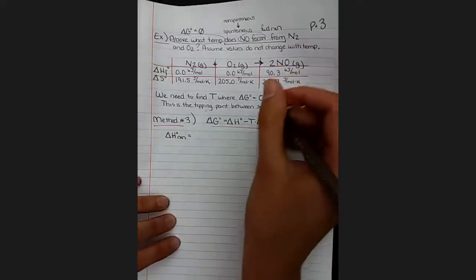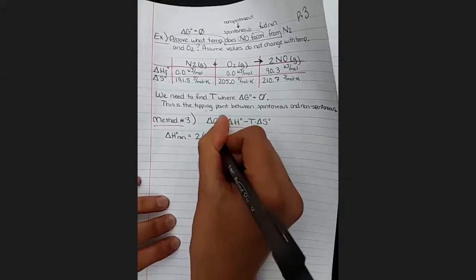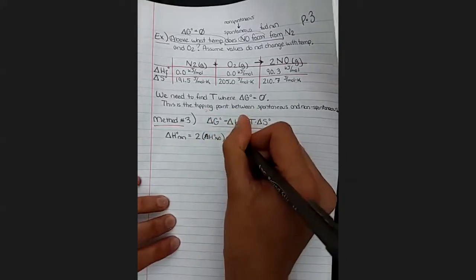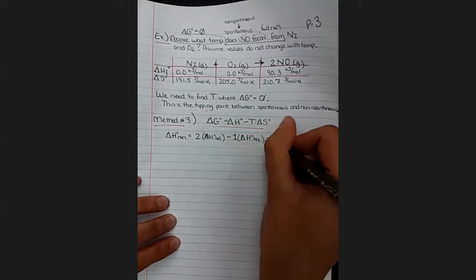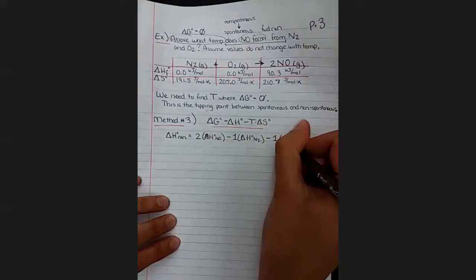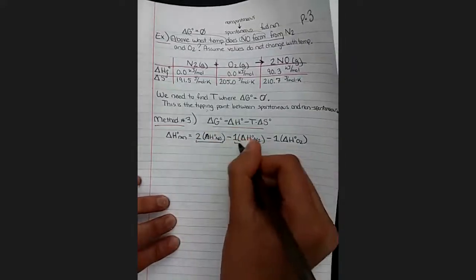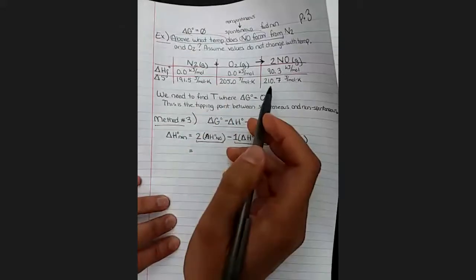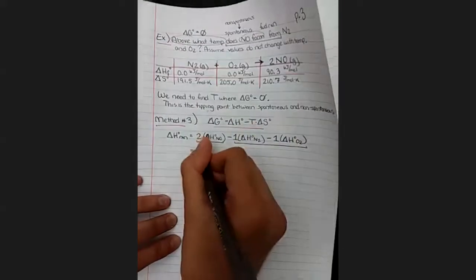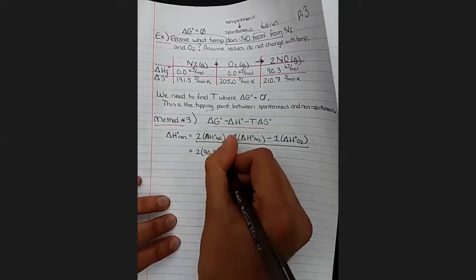So products minus reactants is going to be two times our product, which is NO, minus one times reactant N2, minus one times the other reactant O2. Products minus reactants. And so now we'll throw in our numbers. I like to just throw in the numbers first, just in case there's any negative numbers that I'm going to be plugging in so I don't lose a negative in the process. So two times 90.3 kilojoules per mole, and keep an eye on those units. They like to change.